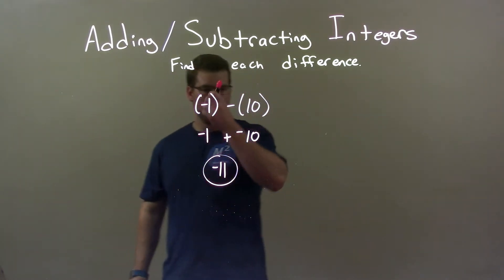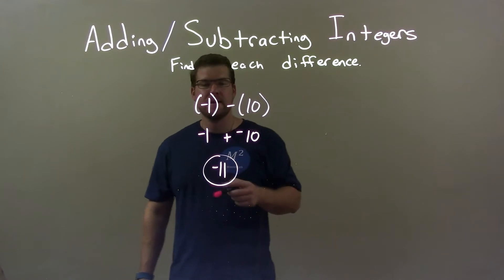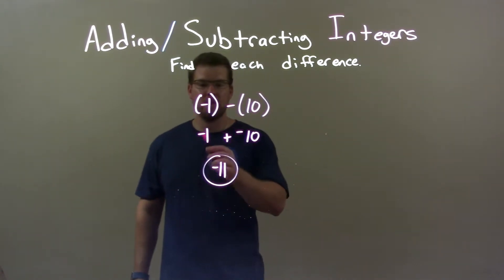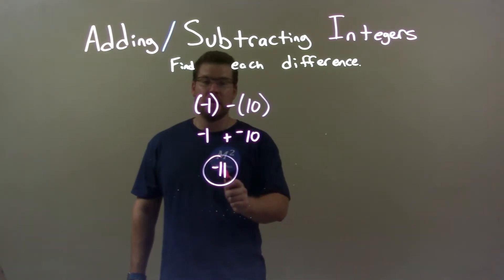So quick recap. We have negative 1 minus 10, and we need to solve that. Well, minusing a 10 is the same thing as adding a negative. So we have negative 1 plus a negative 10, which then we can easily see is just negative 11. So our final answer here is negative 11.